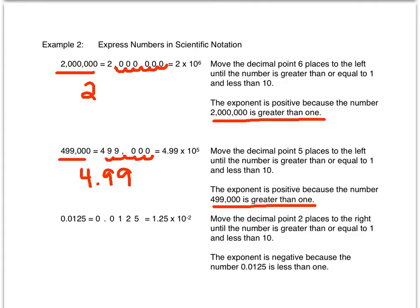In our last example, 0.0125, the decimal point is already there, but we need to move it until we get a number that is greater than or equal to one and less than ten. To do that, I move it two places and get 1.25, which is greater than or equal to one and less than ten. The answer will be 1.25 times 10 to the negative second power because the exponent is negative since 0.0125 is less than one.